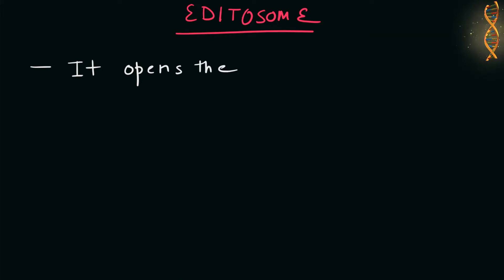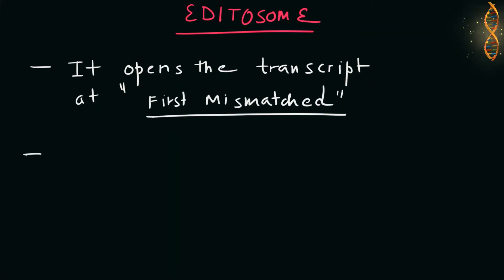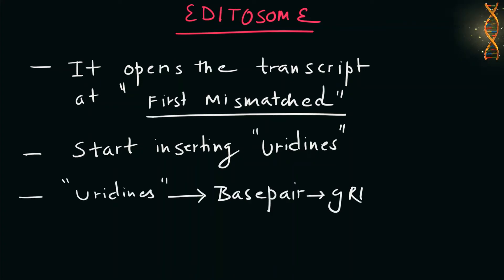The editosome opens the transcript at the first mismatched nucleotide and starts inserting uridines. The inserted uridines will base pair with the guide RNA, and insertion will continue as long as A or G is present in the guide RNA and will stop when a C or U is encountered.